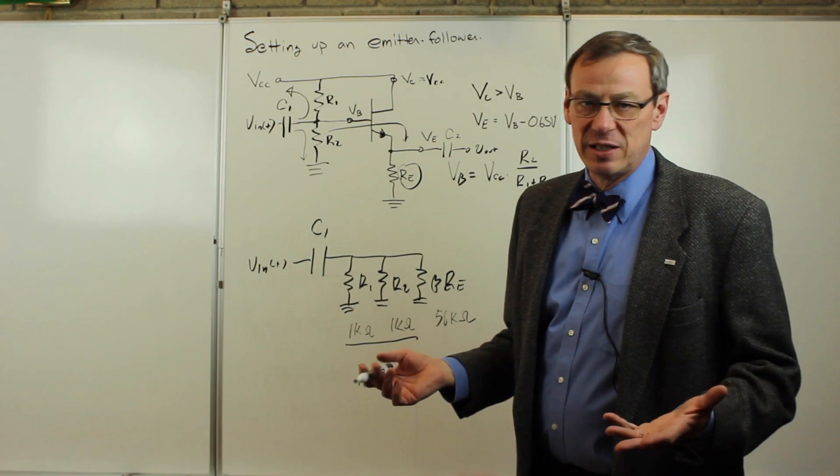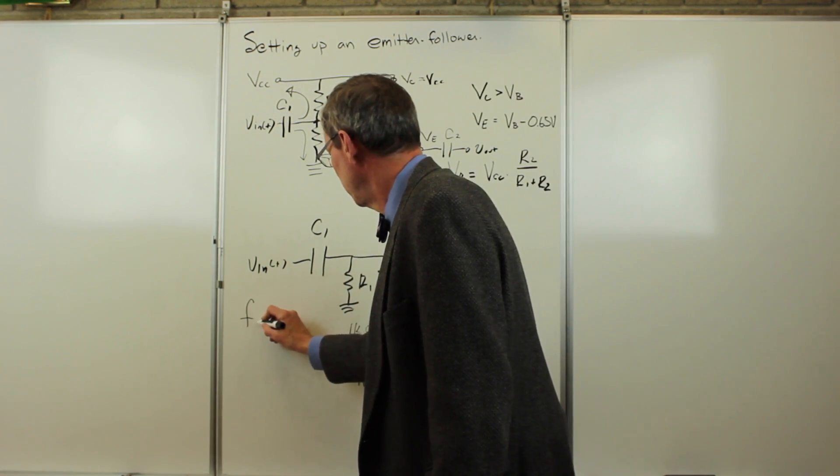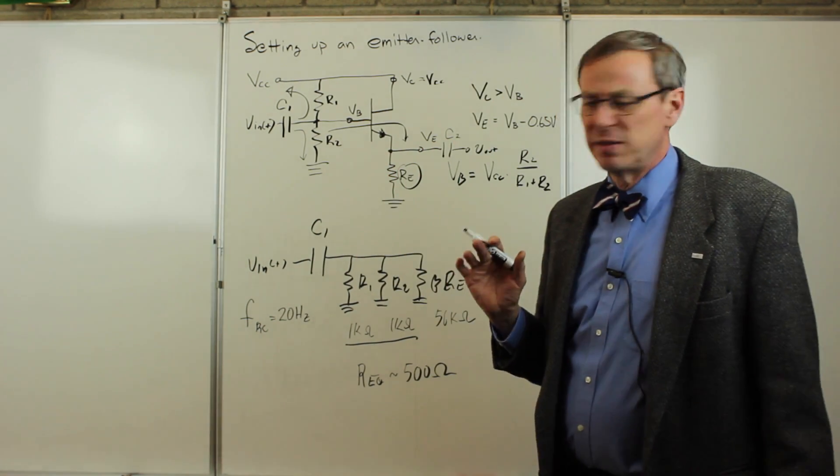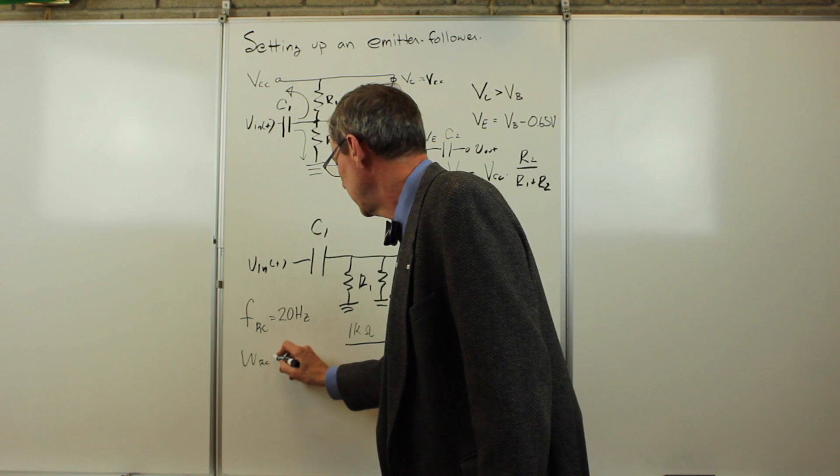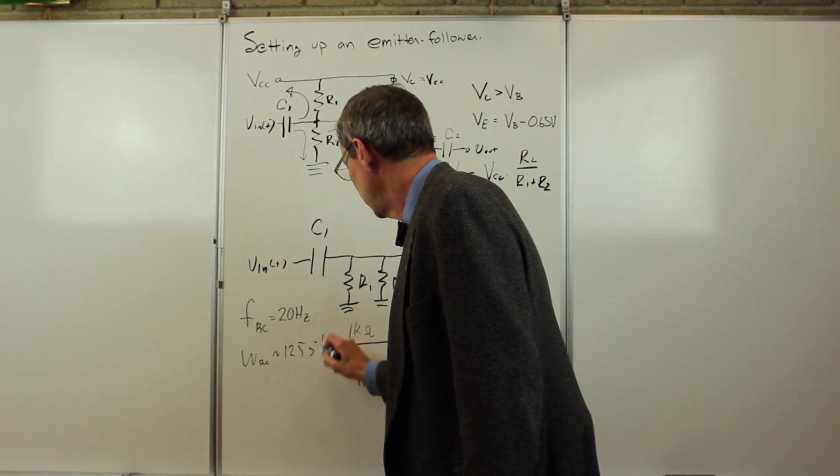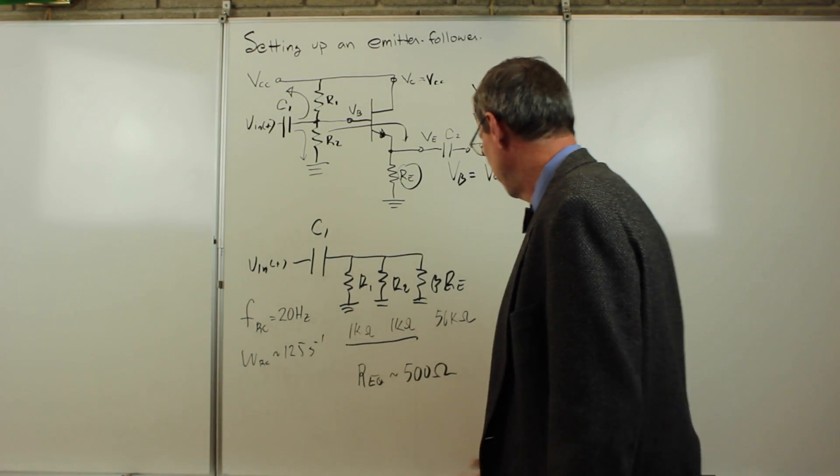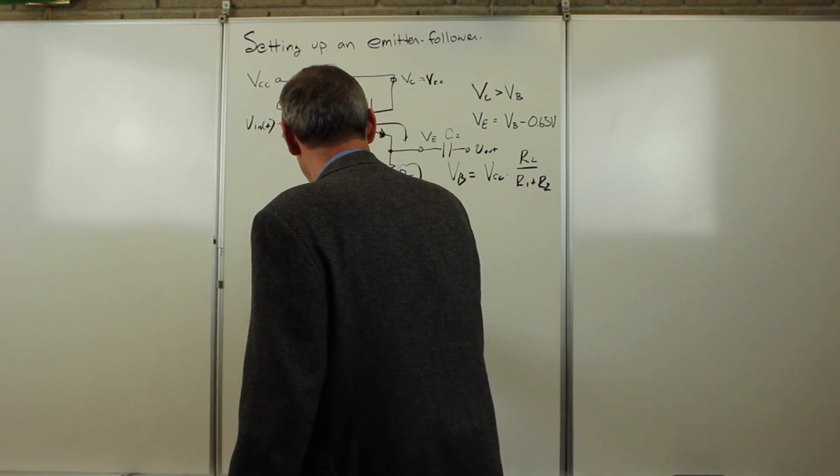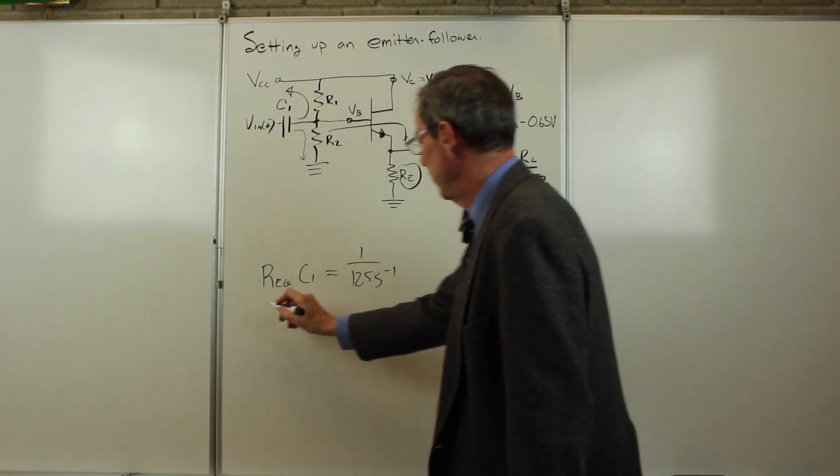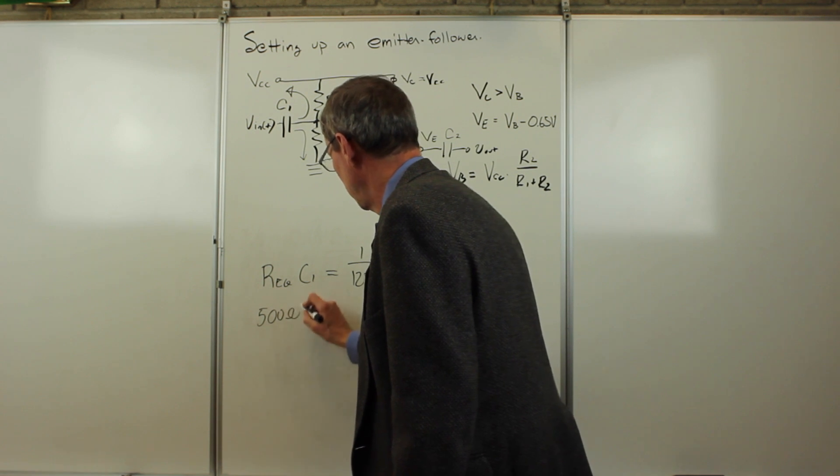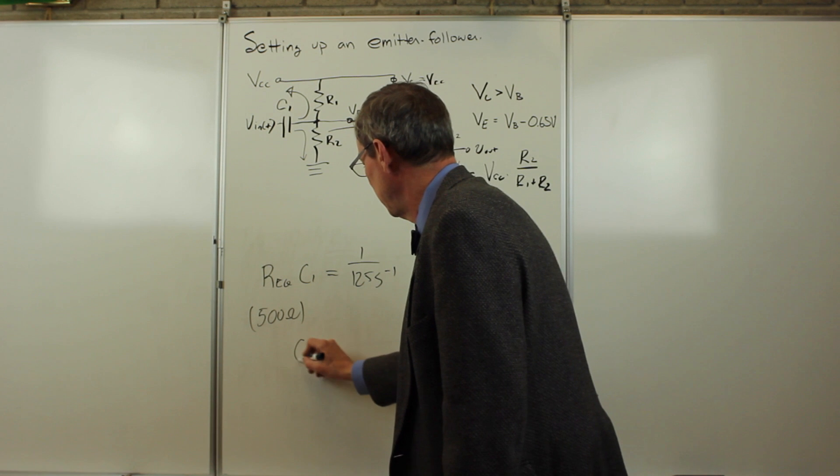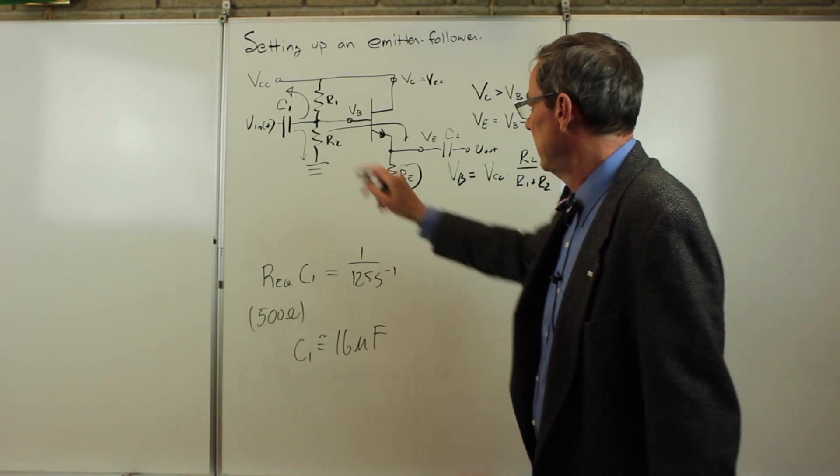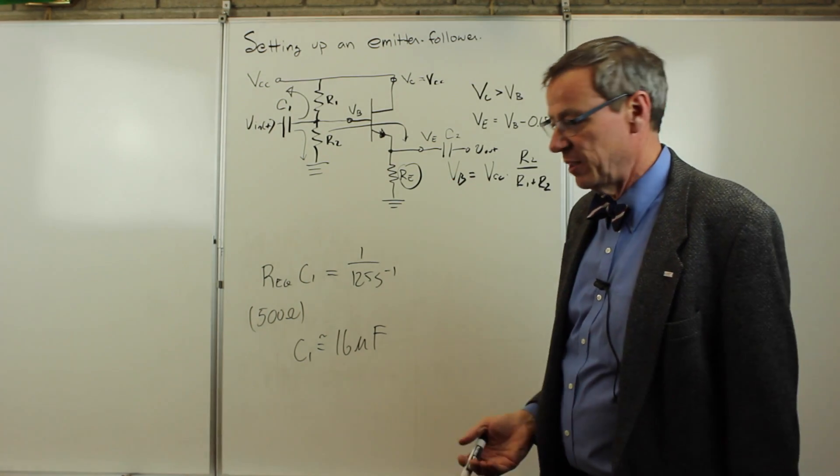This capacitor sees basically 500 ohms to ground. We want to let through AC signals. We'd like to transmit maybe the RC frequency at 20 hertz, the bottom of the audible range of frequencies. That means omega RC is about 125 seconds to the minus 1. So that's enough information for us to determine C1. Our equivalent C1 has to be 1 over 125 seconds to the minus 1 times 500 ohms. So we get C1 is approximately 16 microfarads. With this we have a cutoff frequency that's just audible there.